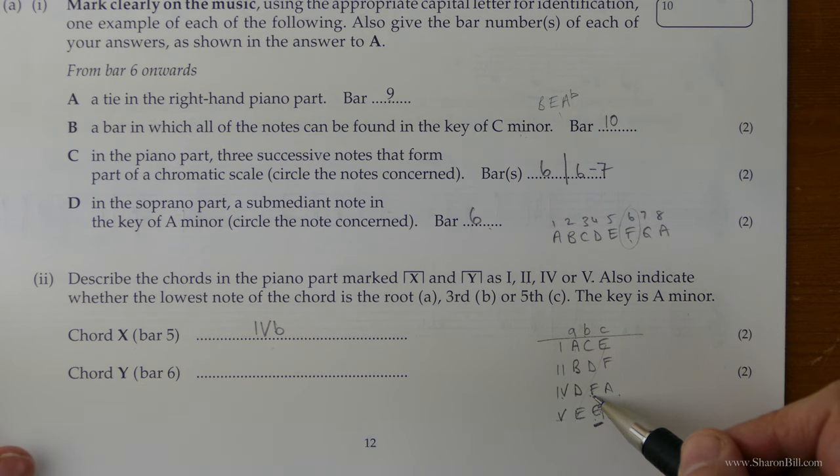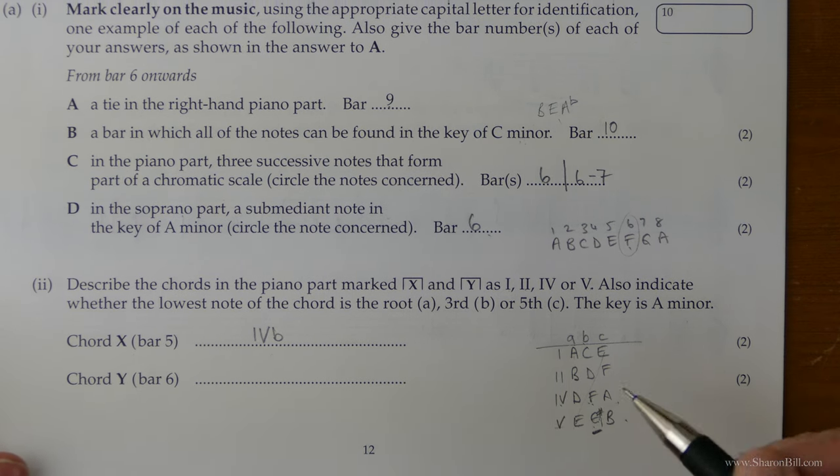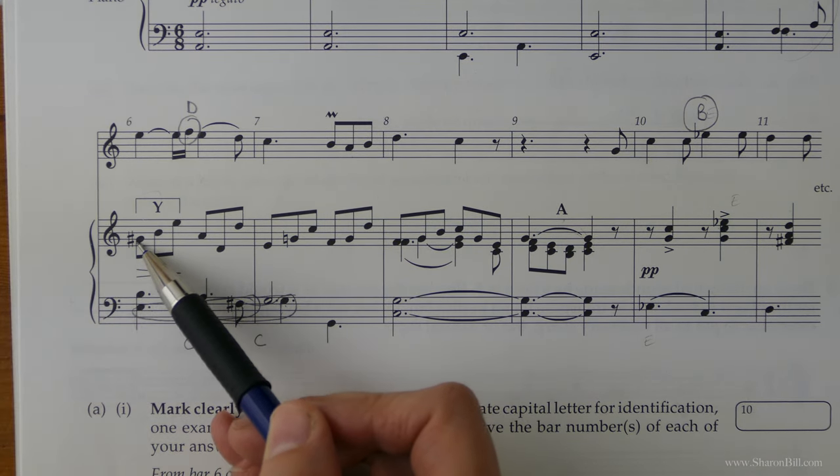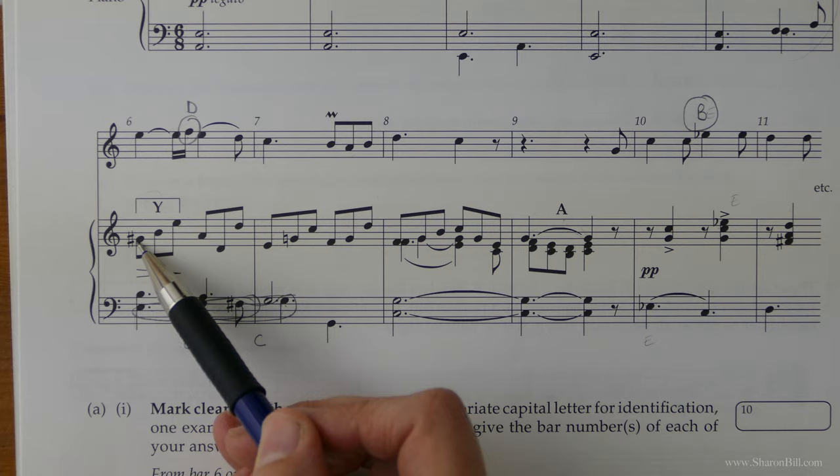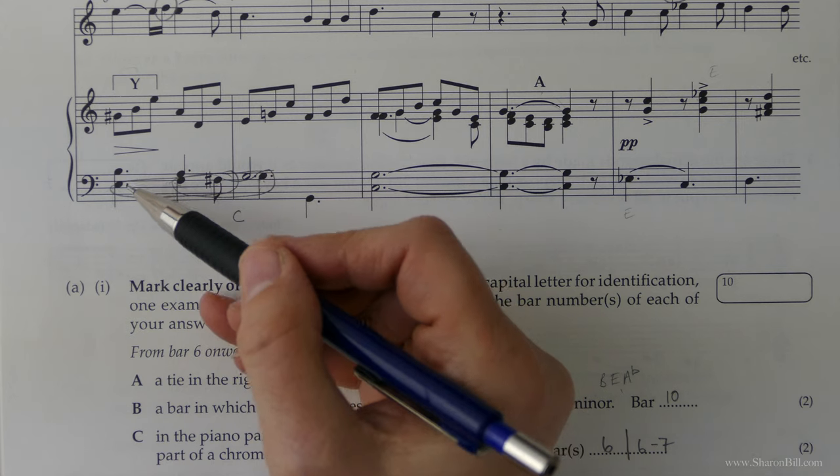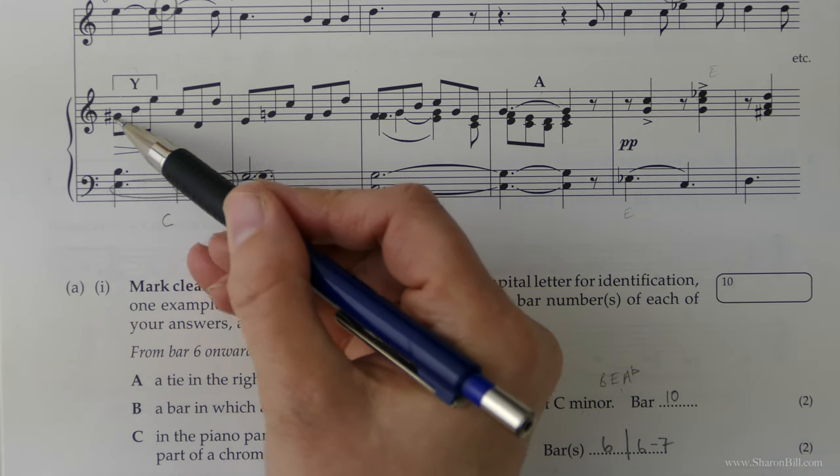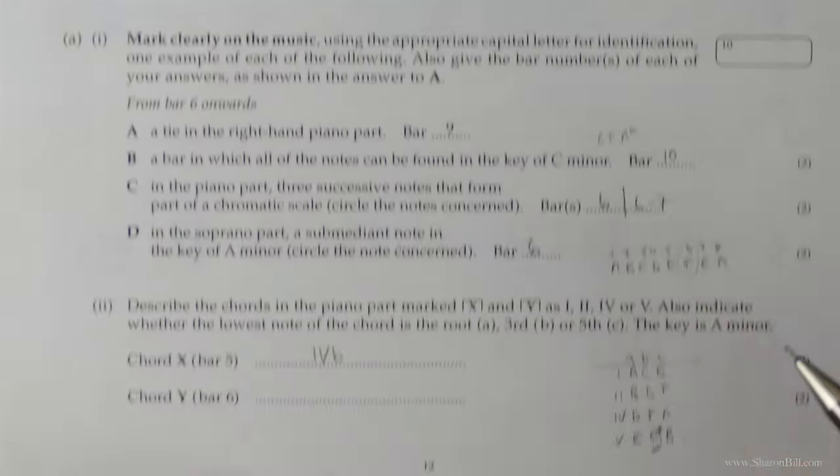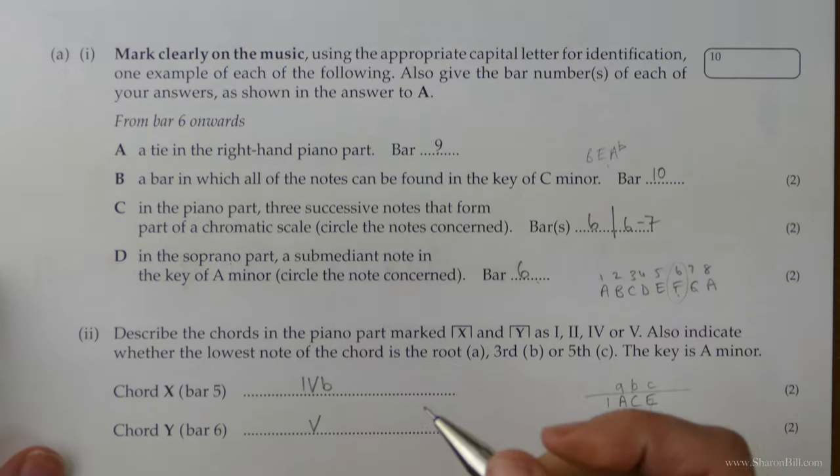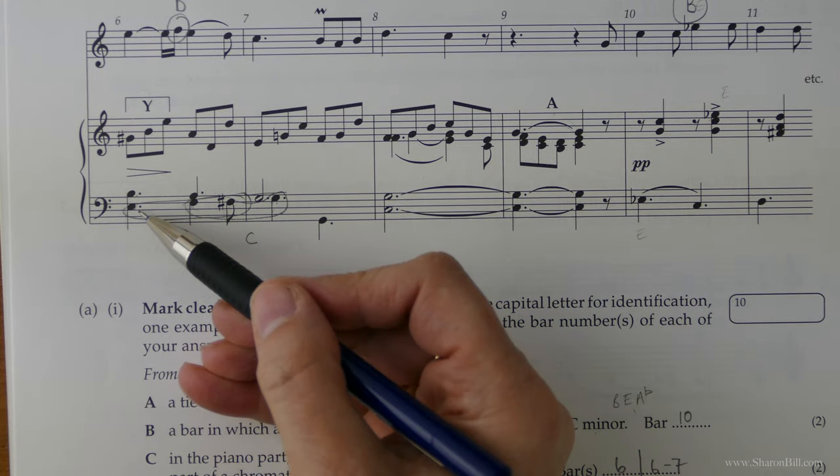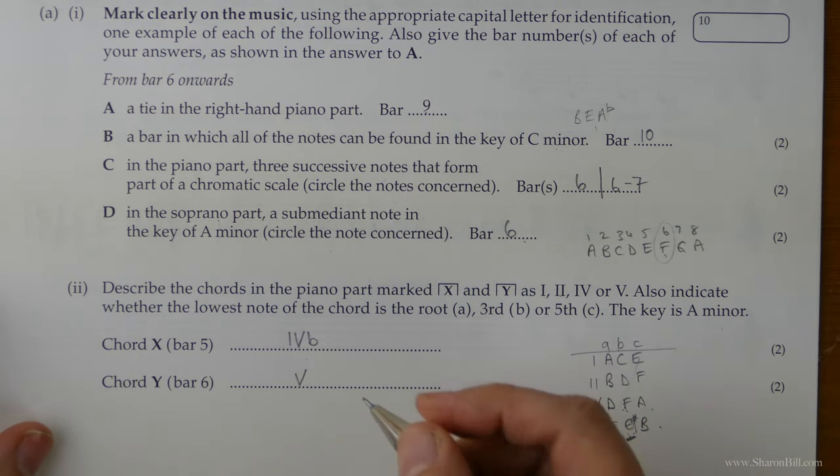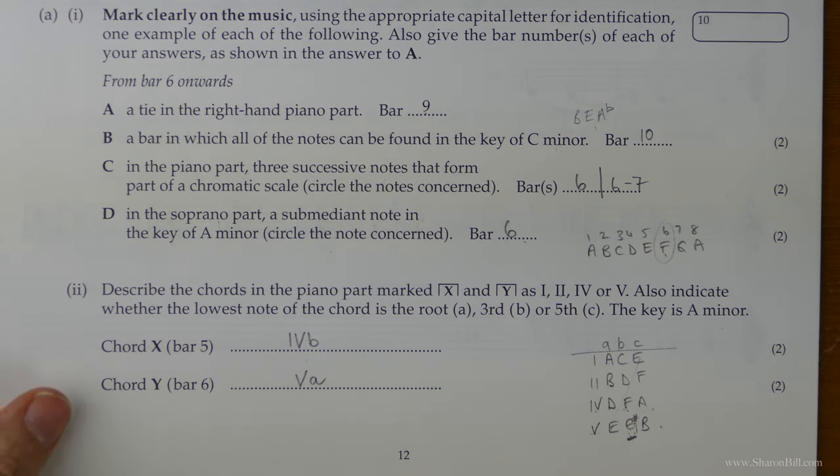So let's look at this next one. So where's chord Y? Here we go. Now a massive clue is we have a G sharp. So straight away that tells us we're probably looking for chord V that's got the raised seventh in it. But let's double check. We have an E, a B, a G sharp, B, E. Yep, definitely chord V. And then we just need to comment on what the bass note is. We have an E in the bass. And so it's in root position. So we could say 5A.